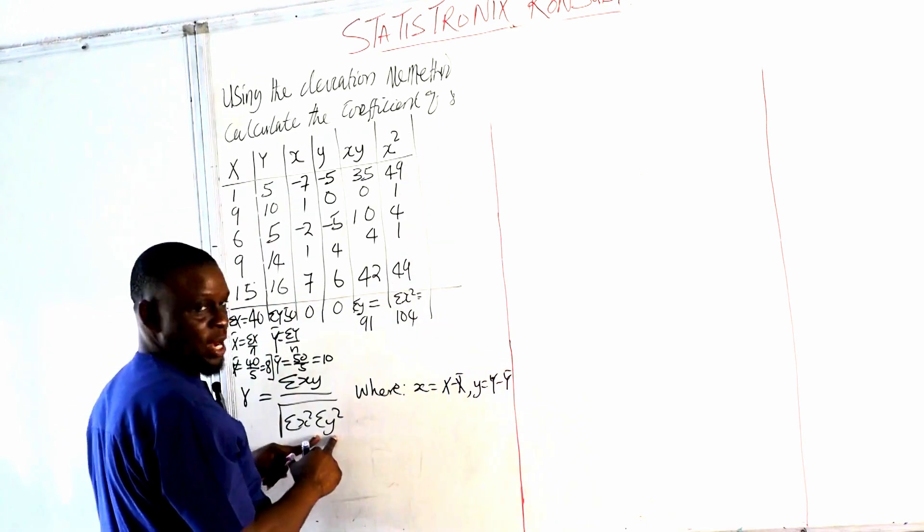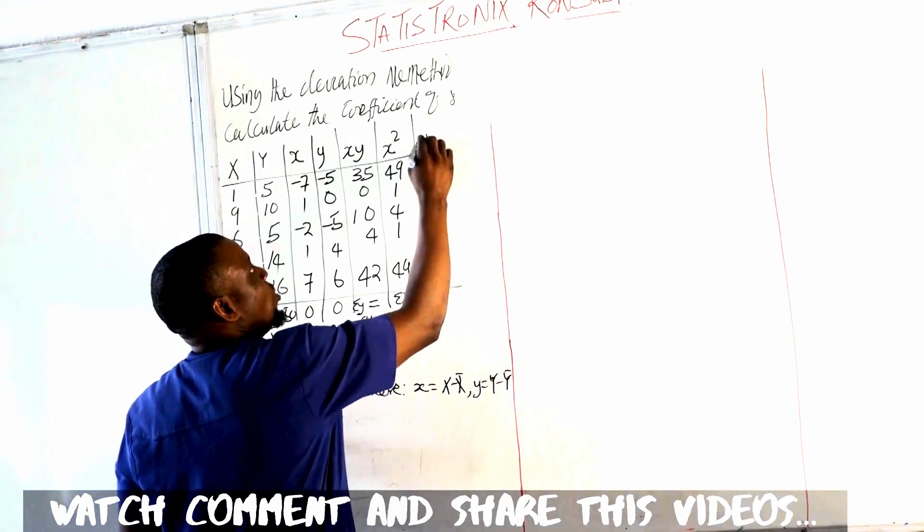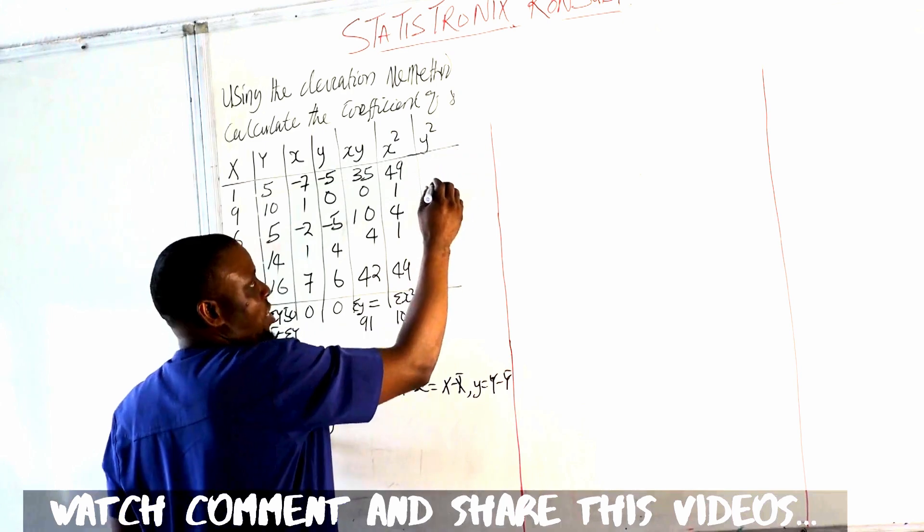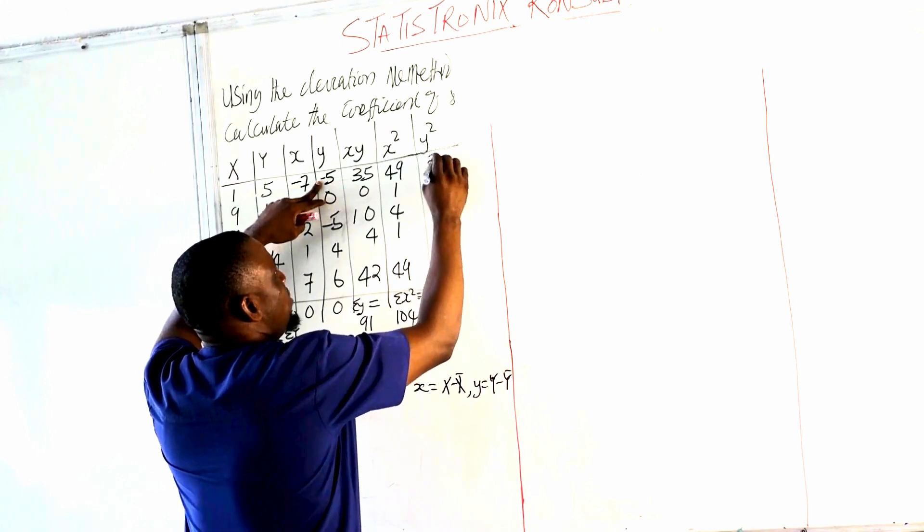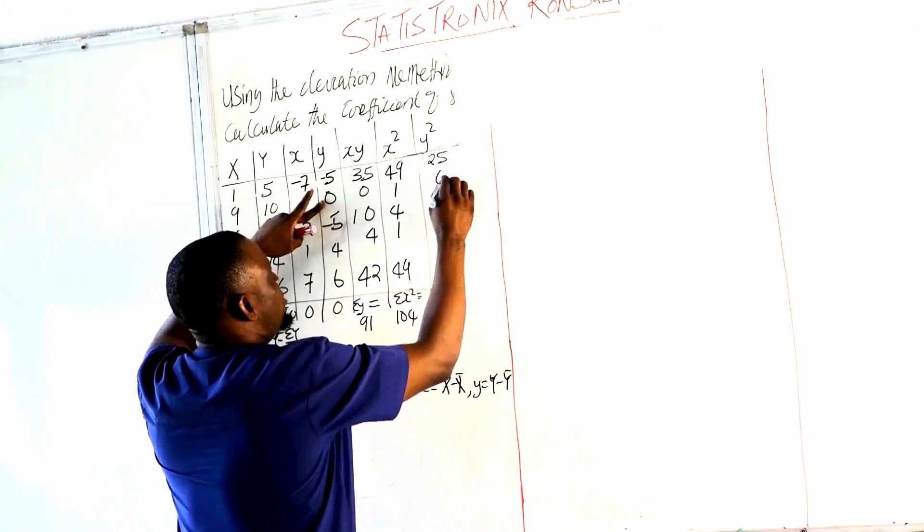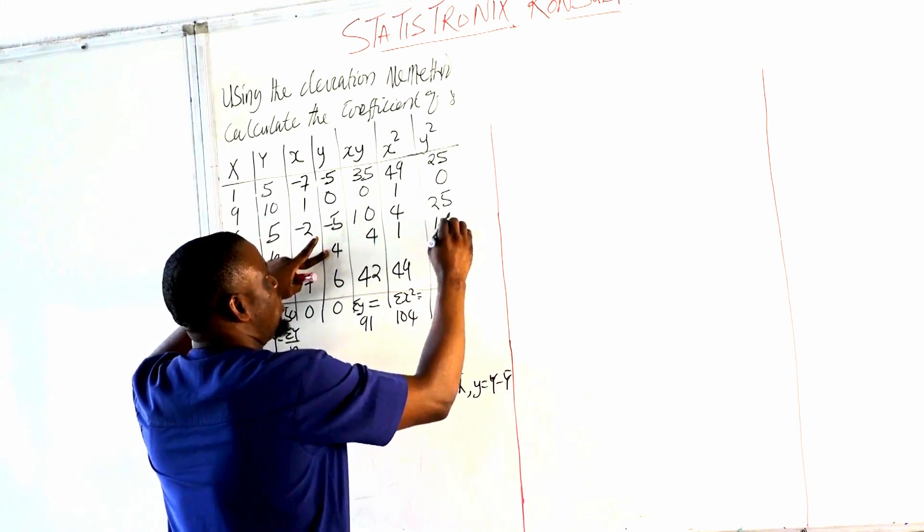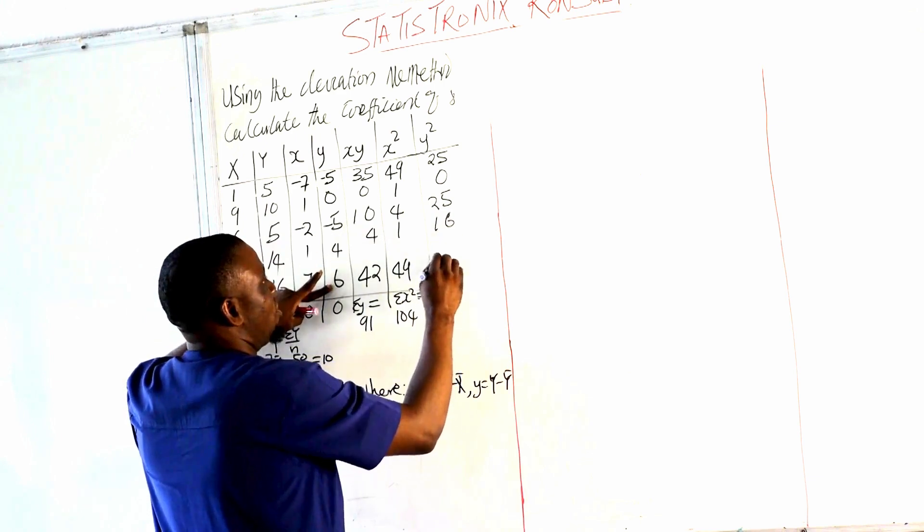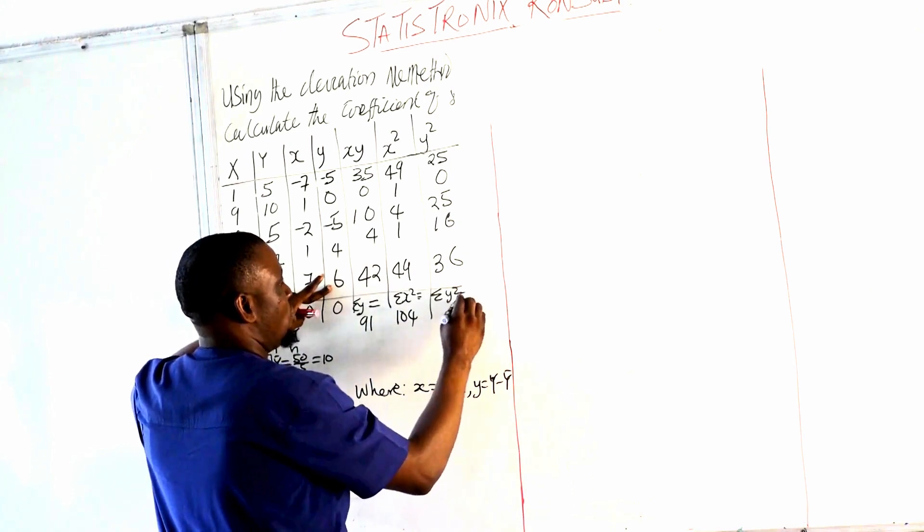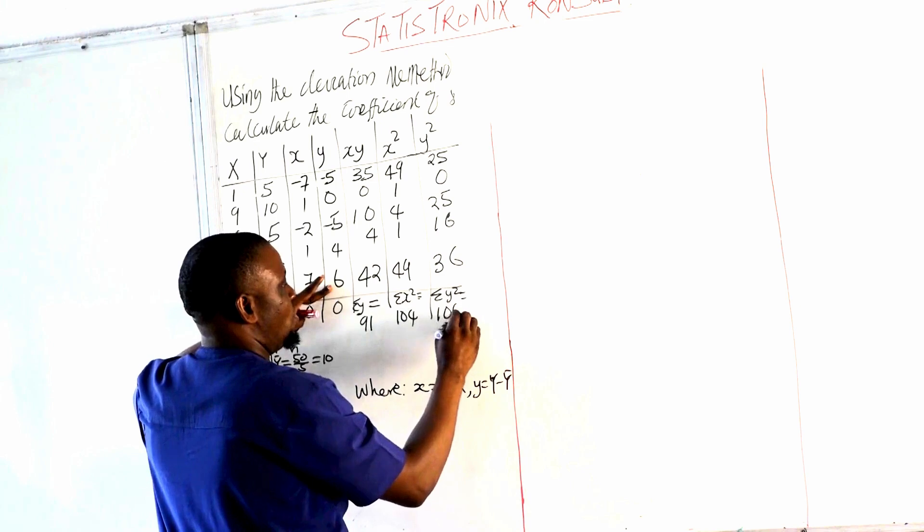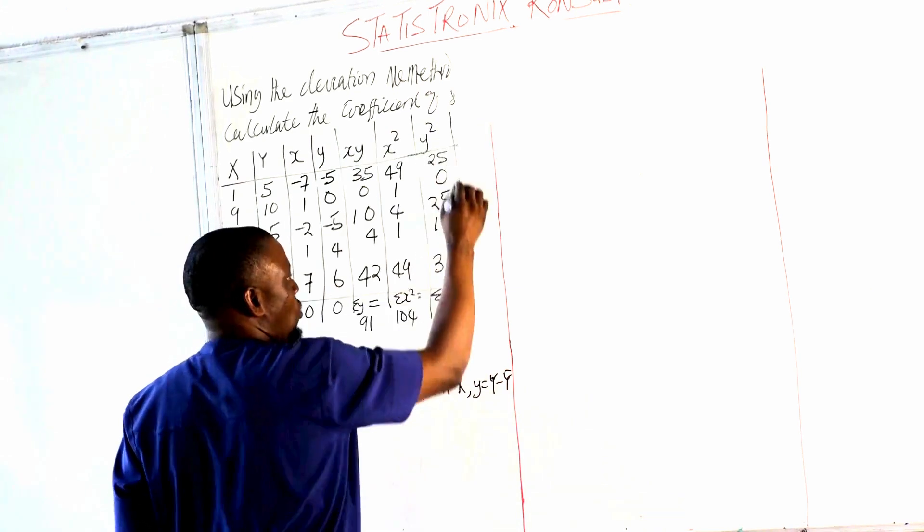Now the next thing in the formula again, we have Y². So we'll create a column and call it Y². So this is y minus 5. So the square of minus 5 is 25, the square of 0, the square of minus 5, the square of 4 is 16, the square of 6 is 36. So the summation of our Y² is equal to 102.